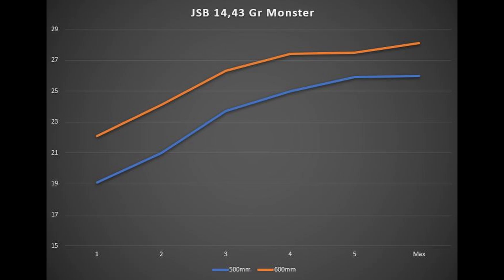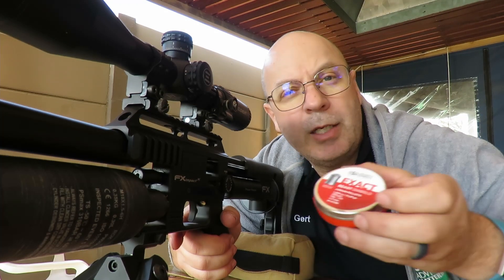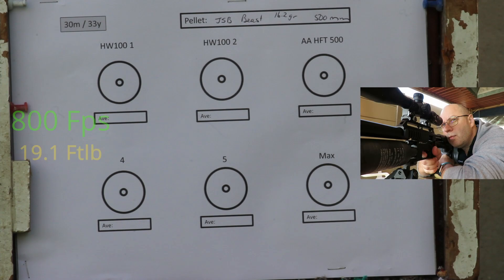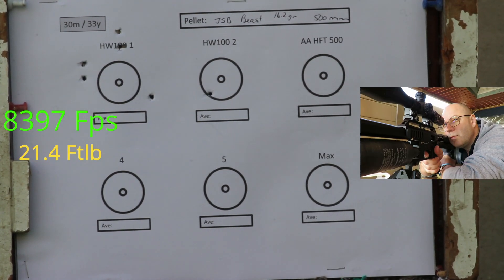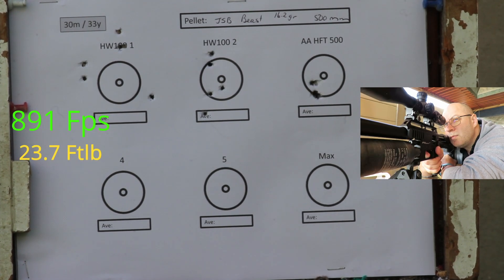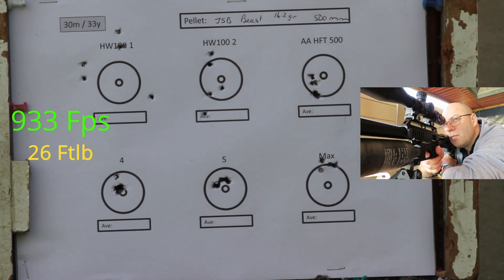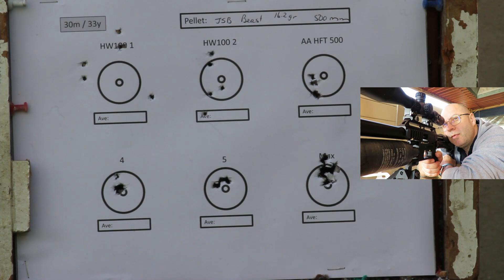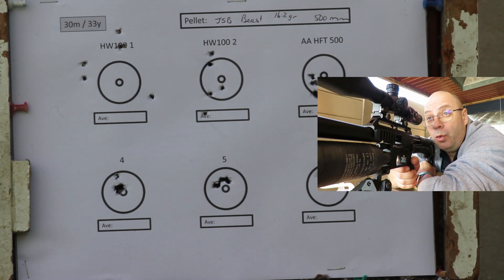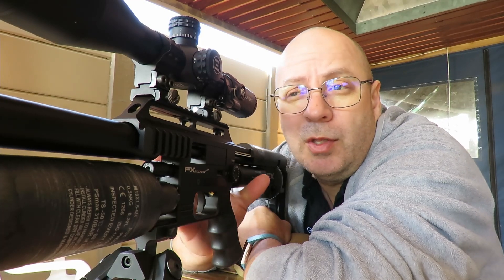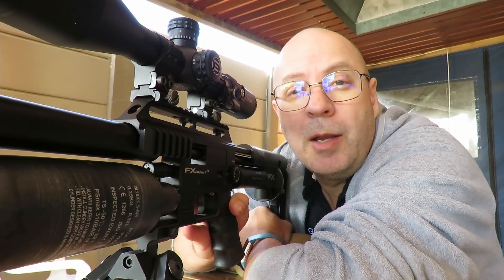Last one for today: JSB Beasts in 16.2 grain, power setting one. Let's rip it. All right, some interesting observations there. Slower speed, no-go—not at all. It only started grouping above 800 feet per second, which is not too shabby. Let me go and post the final results for you, and then we can do a conclusion between the 500 millimeter barrel, the 600 millimeter barrel, and high power yes or no in 177.